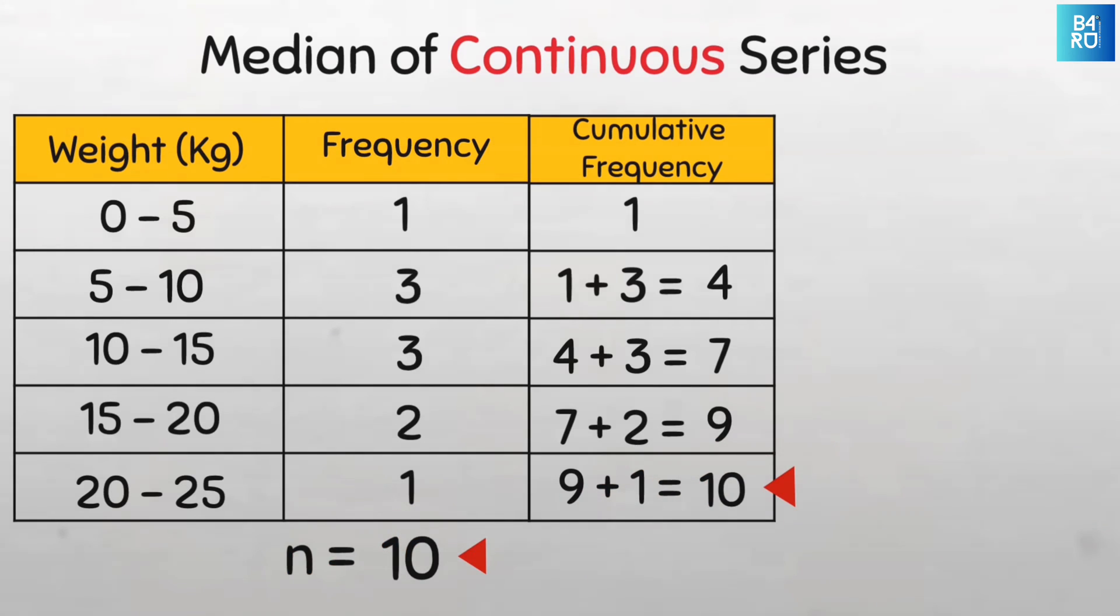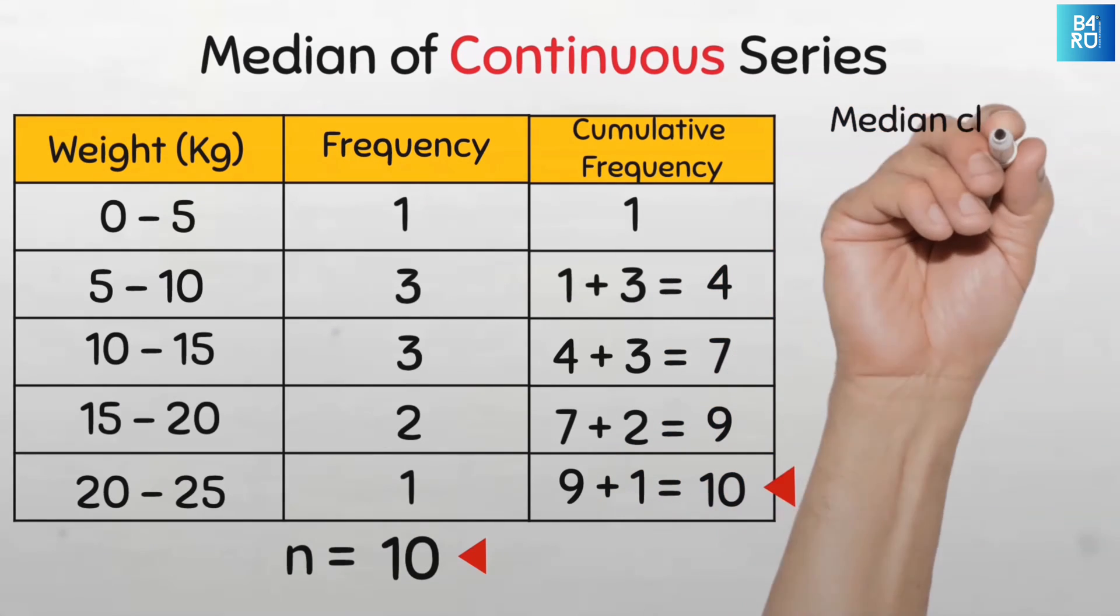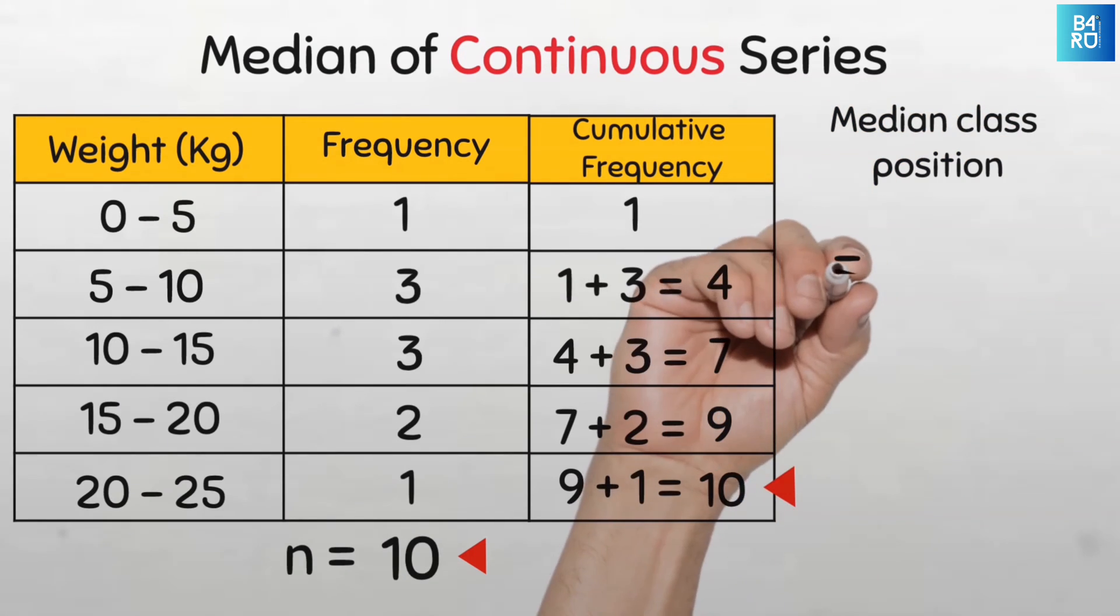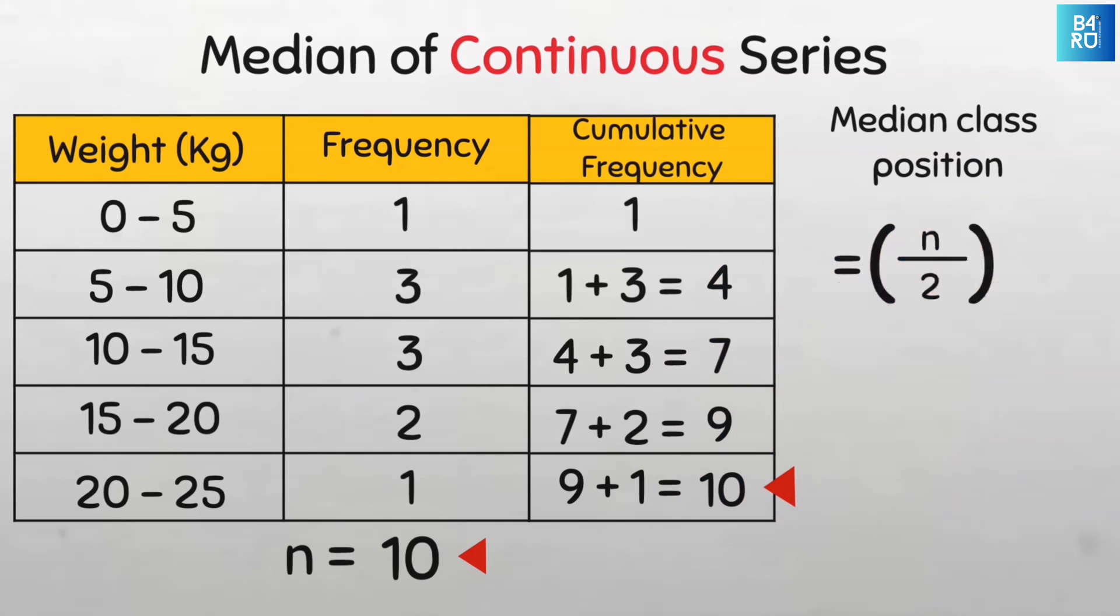And when we add all the frequencies, we confirm the question that says we had 10 children. So our n is 10. Great. So first, we need to find the position of the median class. To find the position of the median class, we will use the formula n divided by 2. So we will do 10 divided by 2 to get the median class position. So this is the fifth position.